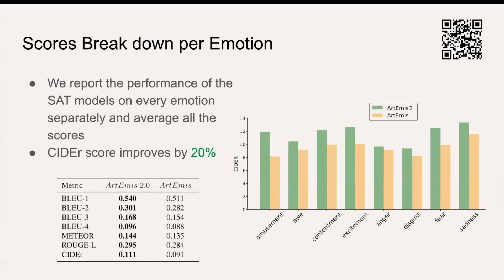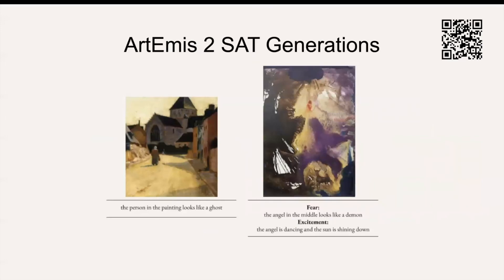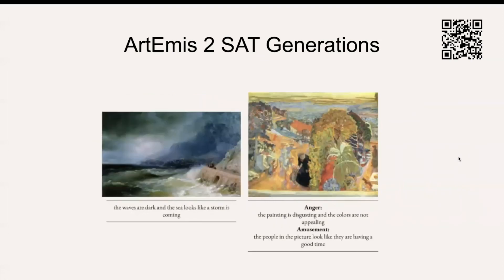We report the scores grouped by grounding emotion. You can see the gains on the Show, Attend and Tell model trained on Artemis 2.0. You can see in this example on the right that the model describes the angel as dancing when the grounding emotion is excitement. However, when the context is fear, it compares it to a demon. This example highlights the model's ability to understand the emotional context and generate captions accordingly.